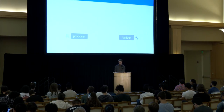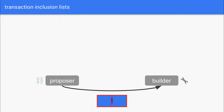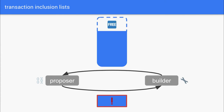Even if we've economically forced out censorship, what if we're in an extreme situation where every single builder is censoring? This is where transaction inclusion lists come in — a constraint the proposer sets on the builder, enforced on-chain. The proposer says to the builder: I want these specific transactions included on-chain — I believe they're being censored — and the builder has no choice but to include these mandatory transactions if they want their block on-chain. So long as a minority of proposers are willing not to censor, at least some fraction of blocks will be non-censoring, even if 100% of builders are censoring.